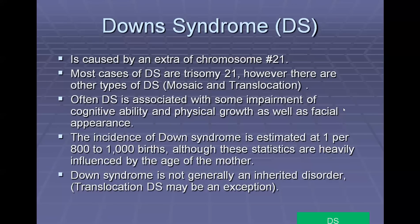Down syndrome is caused by an extra copy of chromosome number 21, and is also called trisomy 21 — meaning you've got three versions of chromosome 21. Down syndrome is associated with impairment of cognitive ability and physical growth. Incidence is one per 800 to 1,000 births, and statistics show that the age of the mother heavily influences Down syndrome — the older the mother, the more likely the homologous chromosomes will have separation issues. It's not generally an inherited disorder; it just occurs randomly.